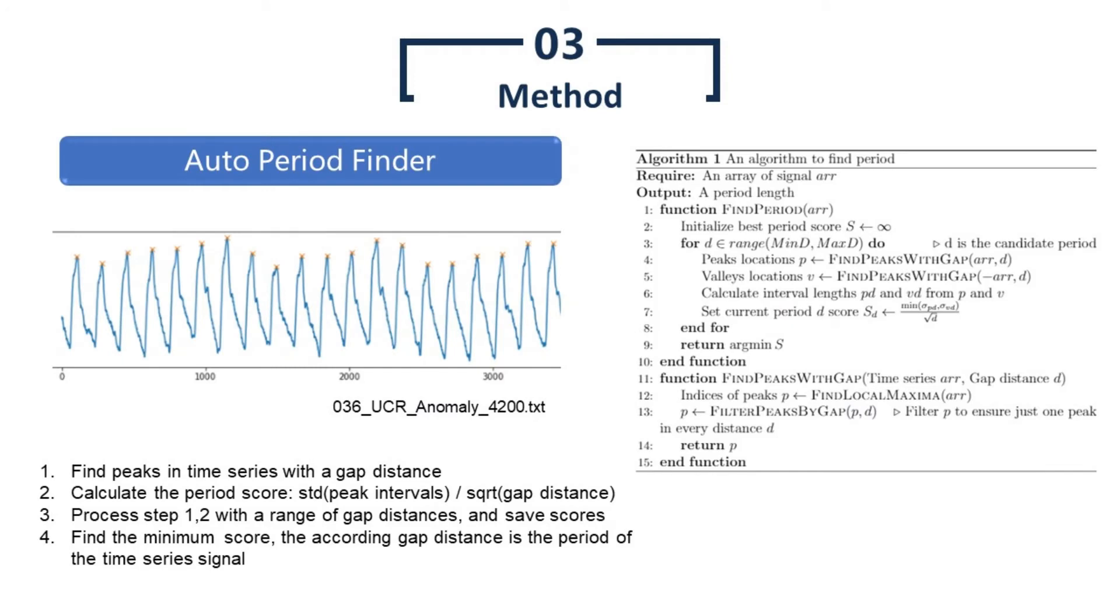Let's go through the details of the algorithms used in TSA-Detect. This slide shows how we find the period of the signal automatically. The idea of this algorithm is to find periods from the location of peaks which have similar intervals. First, we find peaks in time series with a gap distance. In other words, only one peak is considered within the gap distance. Secondly, we calculate the period score, which is defined as the standard deviation of the peak intervals divided by the square root of the gap distance. The steps of 1 and 2 are iterated repeatedly with different gap distances, and all scores are recorded.